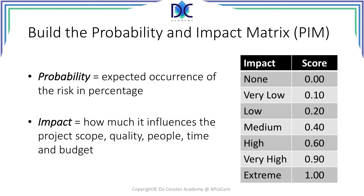We have to define what each level means: none, very low, low, medium, high, very high, and extreme. Extreme would mean that the company would go bankrupt. Medium could mean that we lose $50,000. It depends on the project — you have to find a way to link those descriptions to a scale.